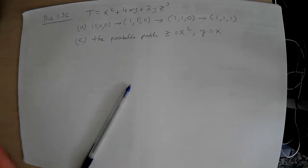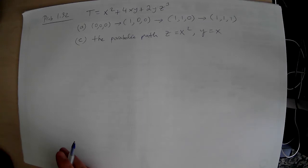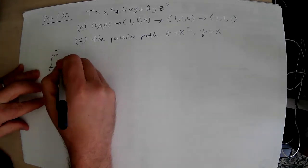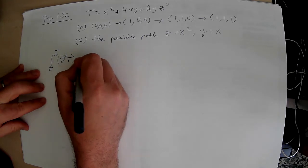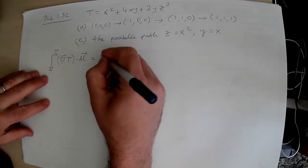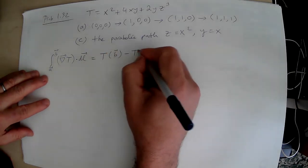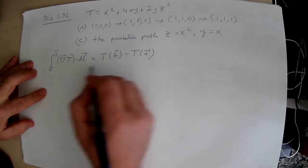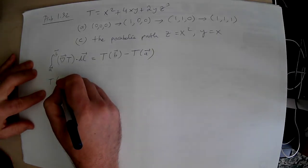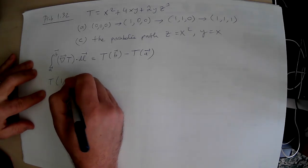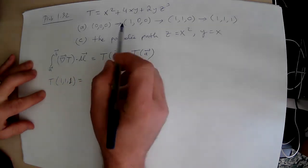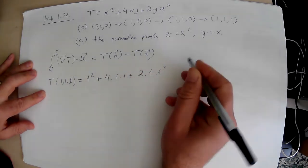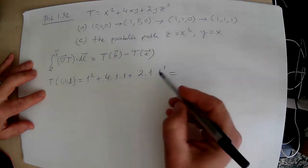Alright, for part A, so we will verify fundamental theorem for gradients. So what we have is integrate point A to B, then I have gradient of the function dot dl, and that should give you this difference of the endpoints. So for part A, let's calculate T(B), which is T of point (1,1,1). So if you replace them: one squared plus four times one times one plus two times one times one cubed, that's going to give you four plus one, five plus two, seven.